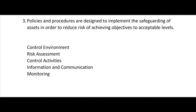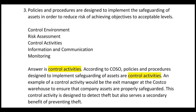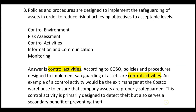Number three: policies and procedures are designed to implement the safeguarding of assets in order to reduce risk of achieving objectives to acceptable levels. That's control activities. An example would be the exit manager at a Costco warehouse — they ask to see your receipt before you leave. This control activity is primarily designed to detect theft but also serves a secondary benefit of preventing theft.